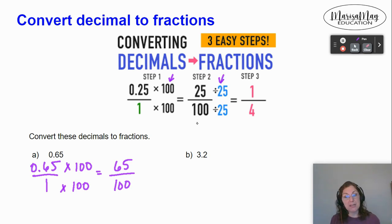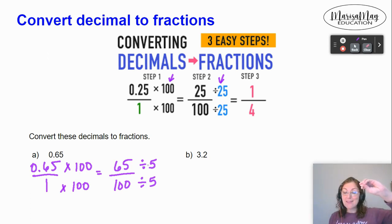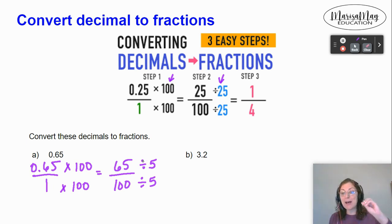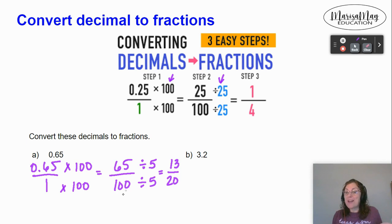Step two is to reduce. I can divide 65 and 100 by 5. Whatever you divide the top by, you have to divide the bottom by the same number. 65 divided by 5 gives me 13, and 100 divided by 5 is 20. There you go — 13 twentieths is the fraction equivalent to 0.65.